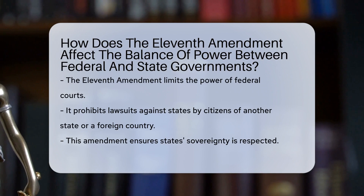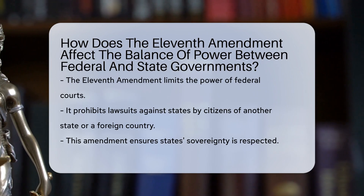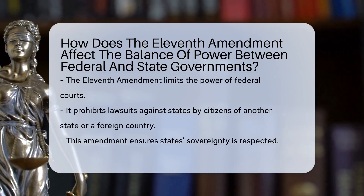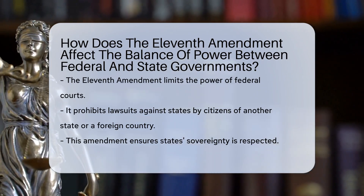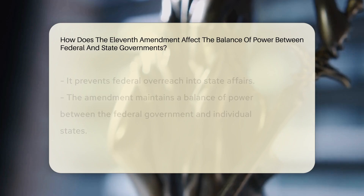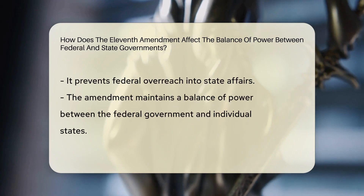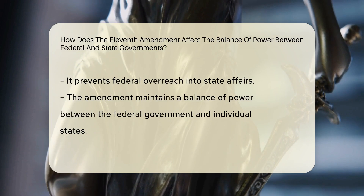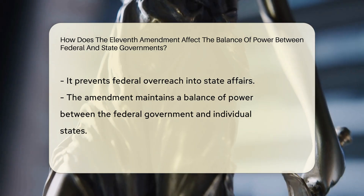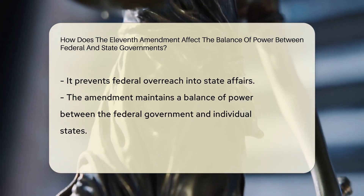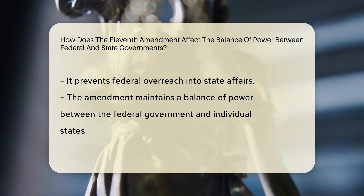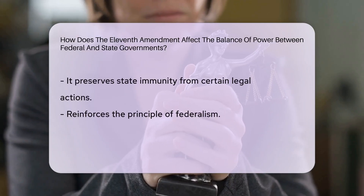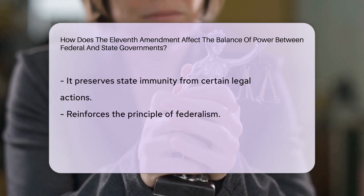The 11th Amendment limits the power of federal courts by prohibiting lawsuits against states brought by citizens of another state or foreign country. This ensures state sovereignty is respected and prevents federal overreach into state affairs. The amendment helps maintain a balance of power between the federal government and individual states by preserving state immunity from certain legal actions.